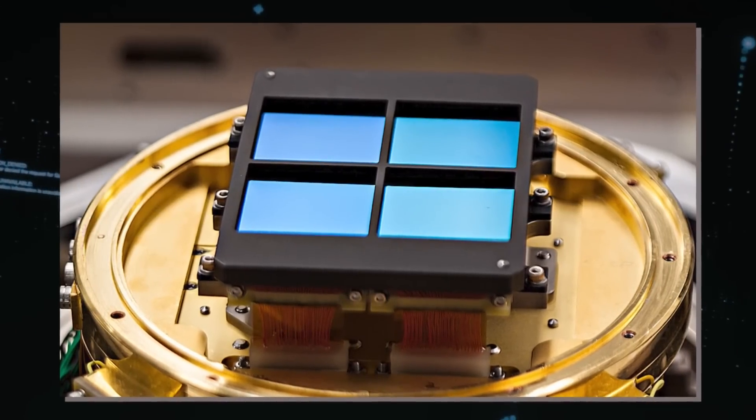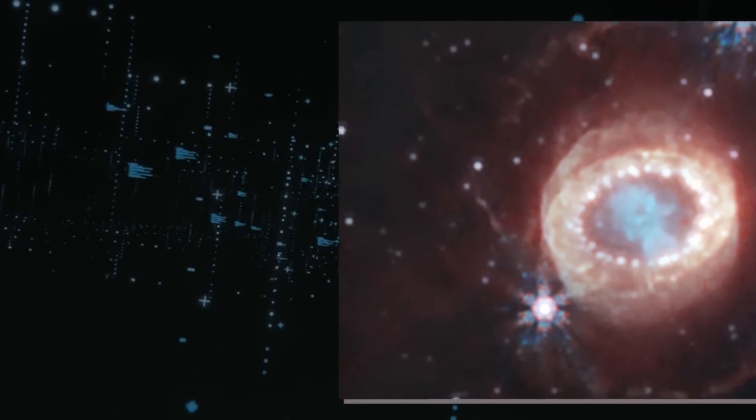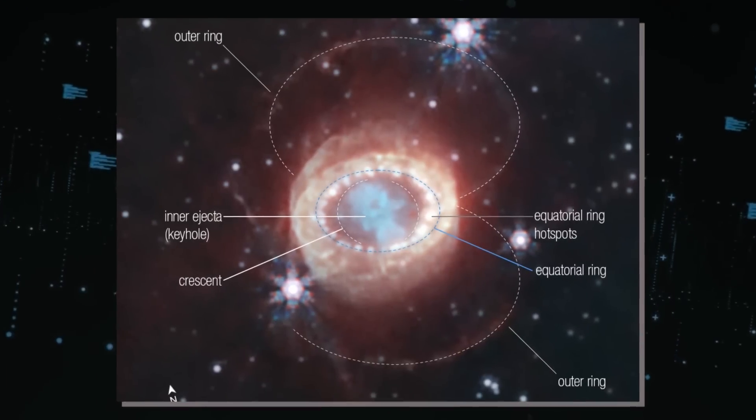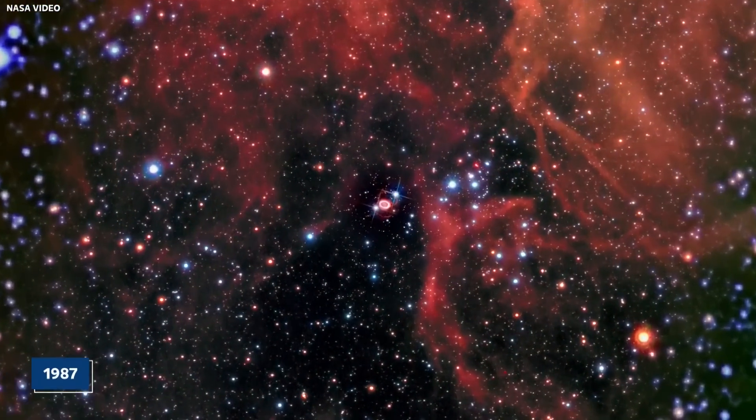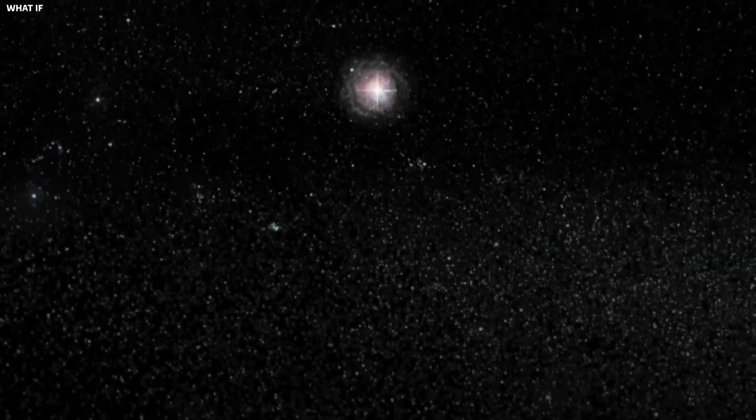Recently, the telescope's near-infrared camera captured a detailed image of the supernova SN 1987A, revealing its intricate structure. But this supernova was first observed before that, in 1987, when astronomers witnessed one of the brightest stellar explosions in the night sky.